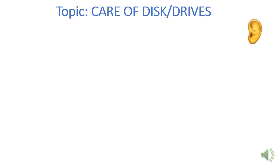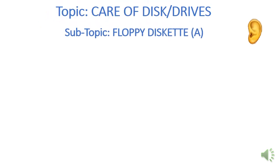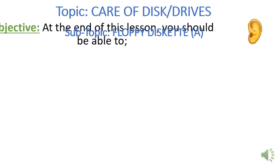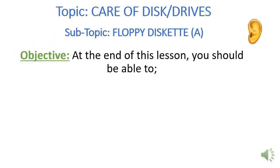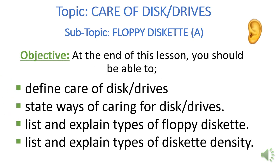I will also take a critical look at floppy diskettes, which is always labeled as disk A. At the end of this lesson, children, you should be able to define care of disk and drives, state ways of caring for disk and drives, list and explain the types of floppy diskettes that we have, and also list and explain the types of disk density that we have.